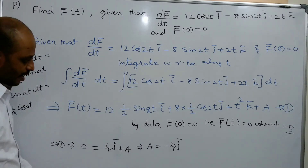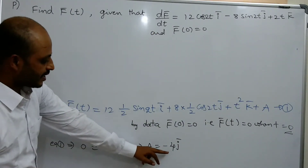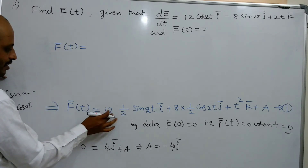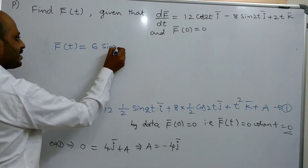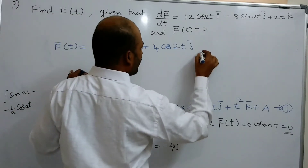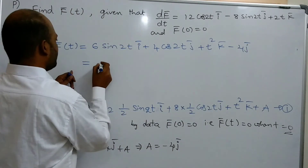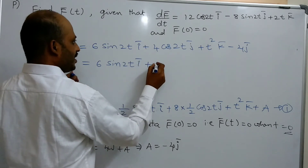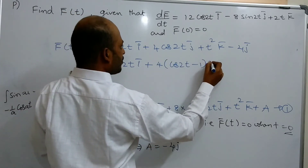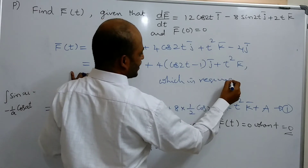Substituting A equals minus 4j̄ in equation 1, we get f̄(t) equals 6sin(2t)ī plus 4cos(2t)j̄ plus t²k̄ minus 4j̄. Simplifying: f̄(t) equals 6sin(2t)ī plus 4(cos(2t) minus 1)j̄ plus t²k̄, which is the required f̄(t).